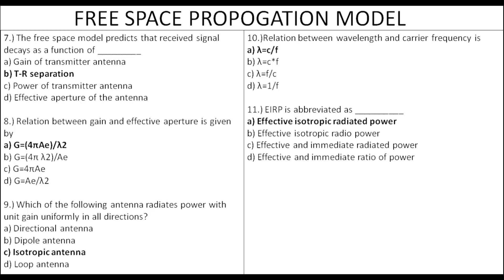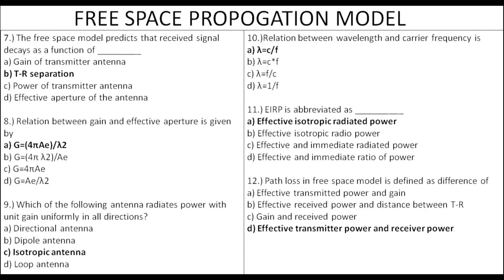EIRP stands for Effective Isotropic Radiated Power, which is used to produce the peak power density. Path loss is the effective transmitted power minus the effective received power — that is, transmitter minus receiver.